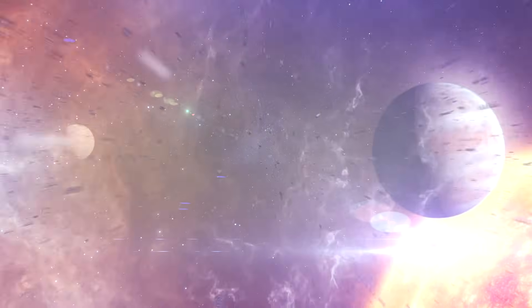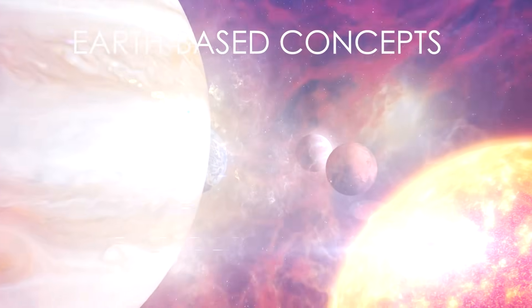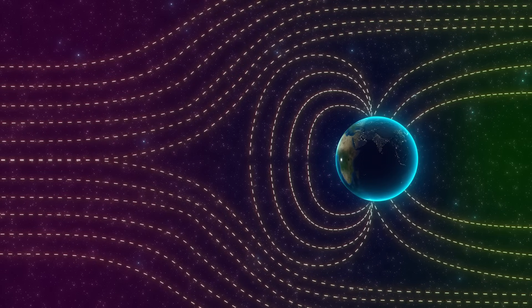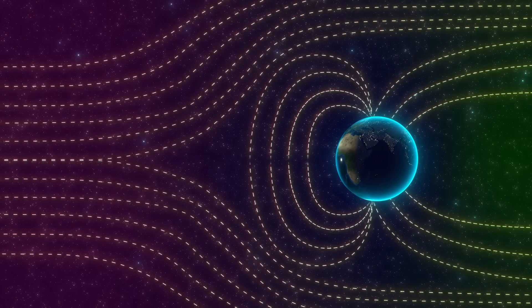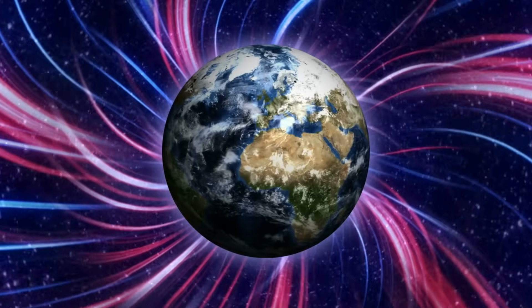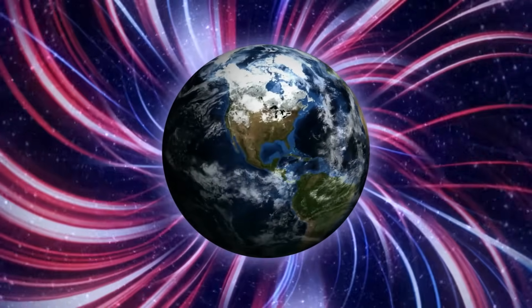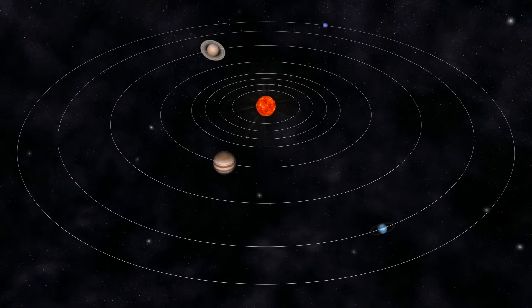The truth is that mainstream science has conditioned us to think about space using Earth-based concepts that simply don't apply beyond our atmosphere. On Earth, up and down have clear meanings because gravity provides a universal reference point. But in the vacuum of space, these directions become entirely relative. When astronomers talk about what's above or below our solar system, they're using the ecliptic plane as an arbitrary reference point, a fact rarely emphasized in educational materials.